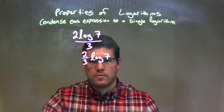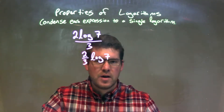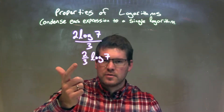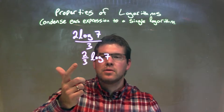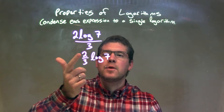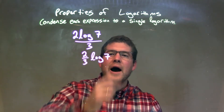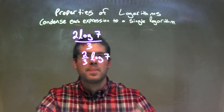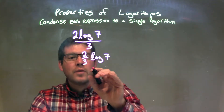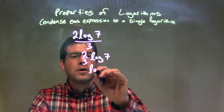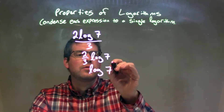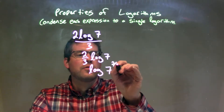Now we have 2 thirds out front, log of 7. 2 thirds is still a number — it's a fraction, but it's still a number. And we can write that as the power of the 7. So we can rewrite this to be log of 7 to the 2 thirds power.